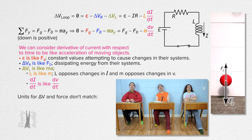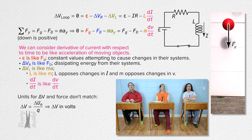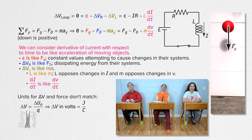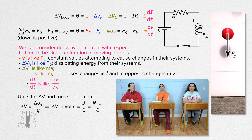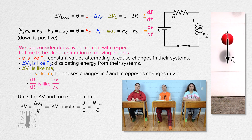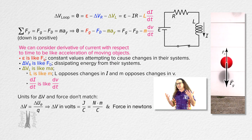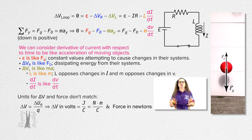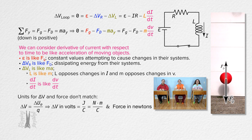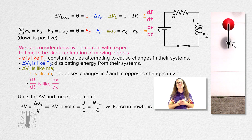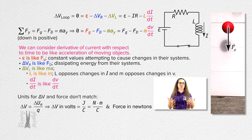The units don't match up though. Electric potential difference is in volts, which are joules per coulomb, and joules are newtons times meters, so electric potential difference is in newton meters per coulomb. However, force is just in newtons. Right — I said it's an analogy. The units don't match; however, their behaviors do. Thank you very much for learning with me today. I enjoyed learning with you.